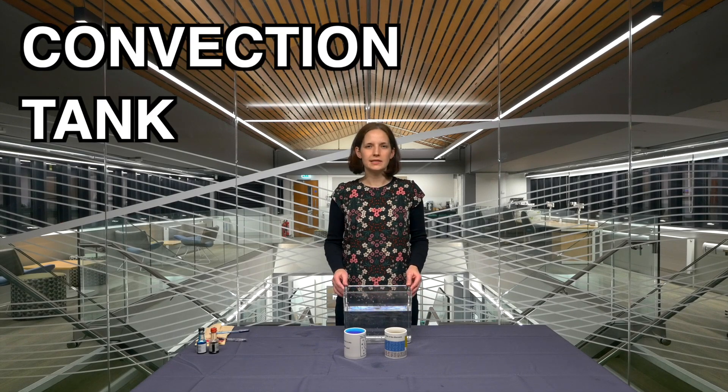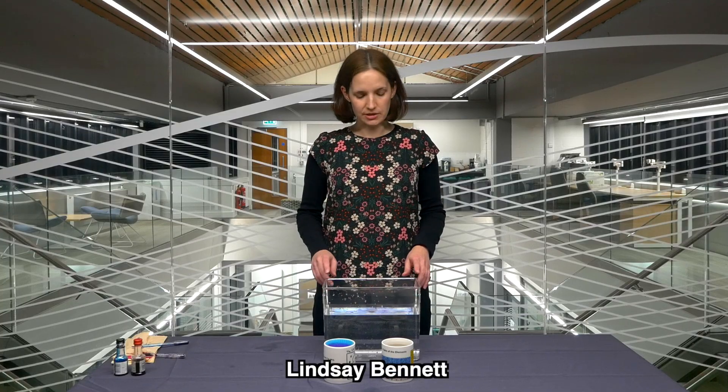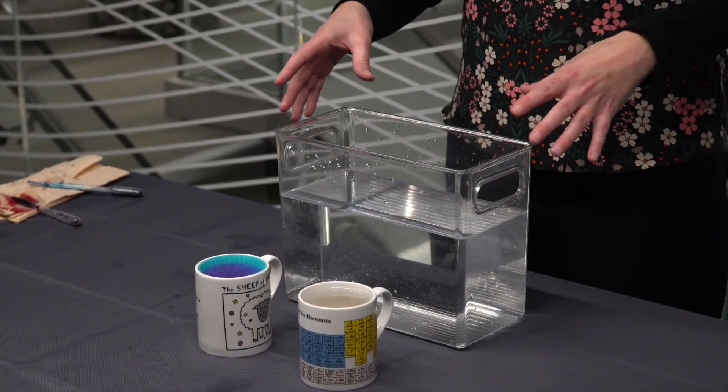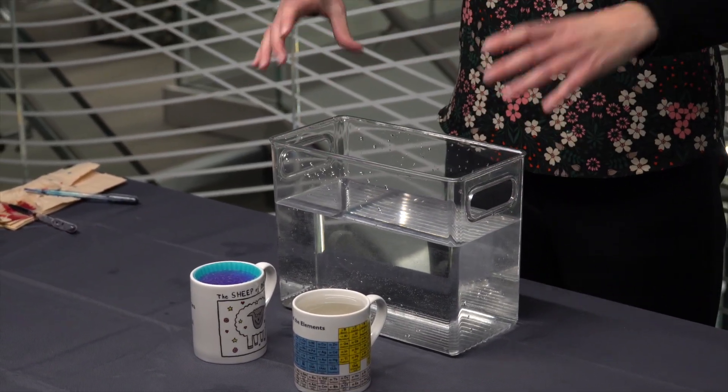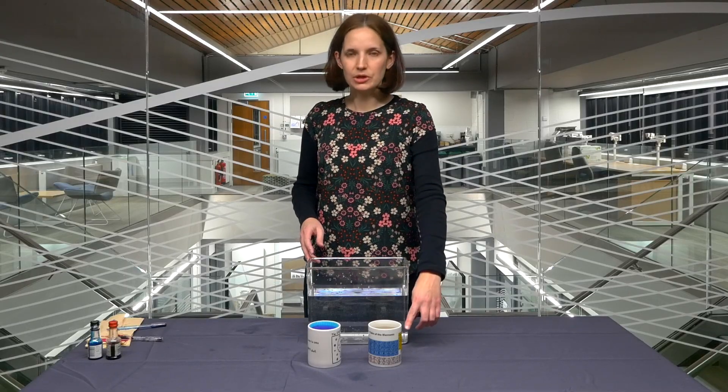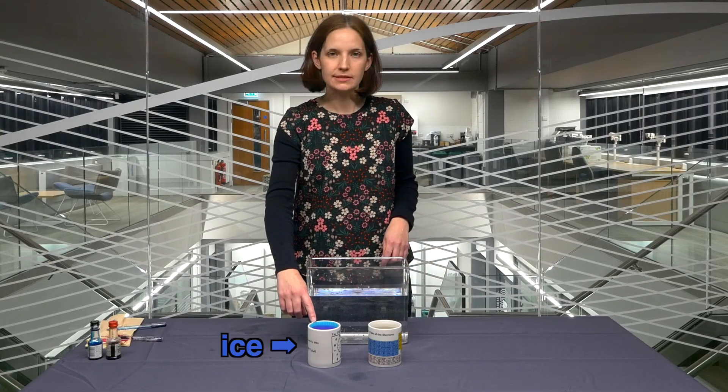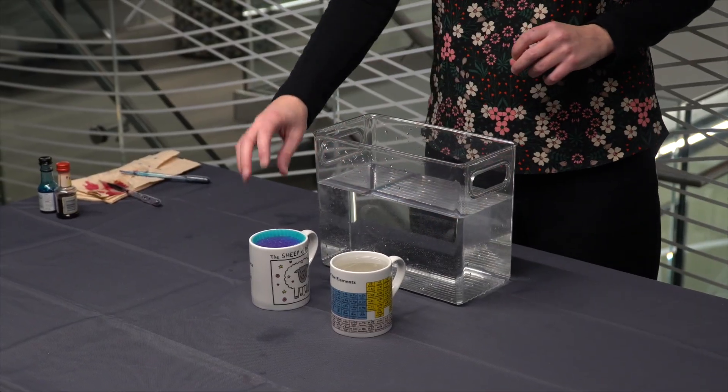We're going to do the convection tank demonstration. For this demonstration, you need a tank of water—you can use a plastic box or any container that's quite long and narrow. You'll need one mug cup of very hot boiling water and in the other one ice, so we've got a heat source and a cold source.